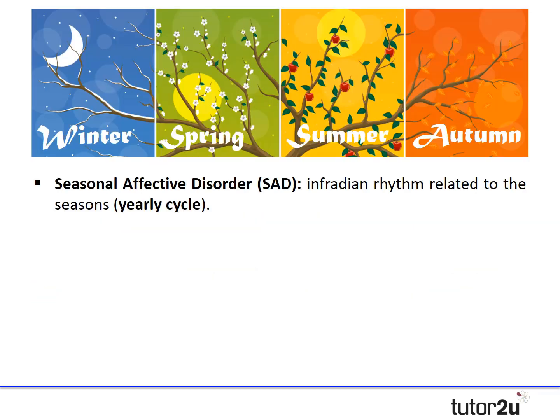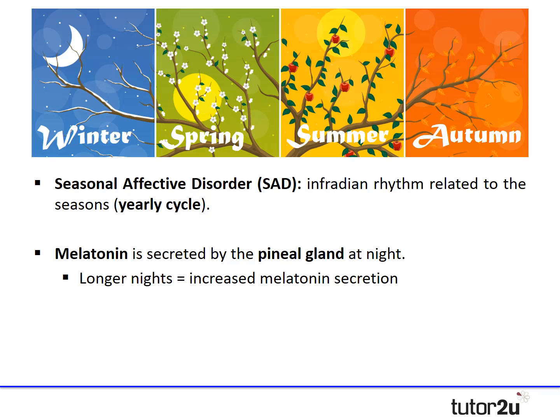A second example of an infradian rhythm is seasonal affective disorder, abbreviated to SAD, which is related to the seasons. Researchers found seasonal variation in mood where some people become depressed in winter months — sometimes called the 'winter blues.' SAD is an infradian rhythm governed on a yearly cycle. Psychologists argue that melatonin, secreted by the pineal gland during night, is partly responsible, and that the lack of light during winter results in a longer period of melatonin secretion, which has been linked to depressive symptoms.